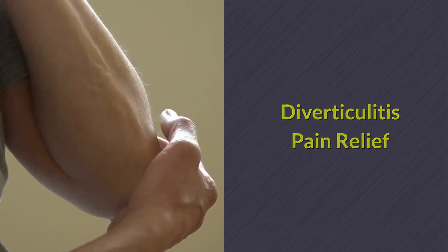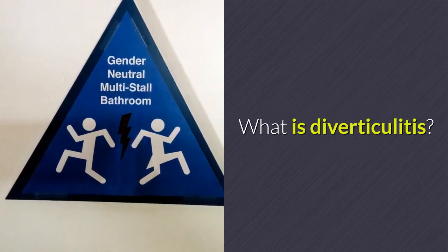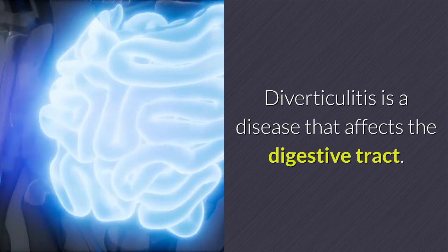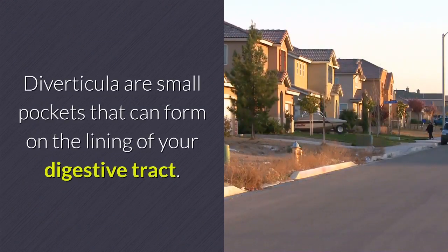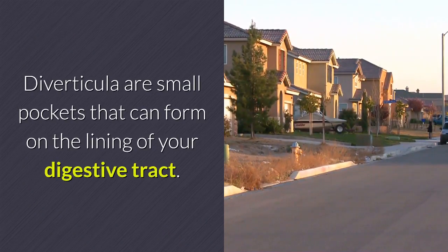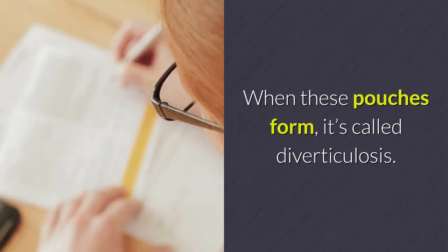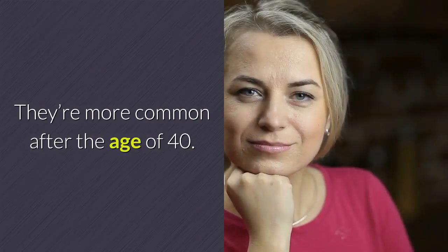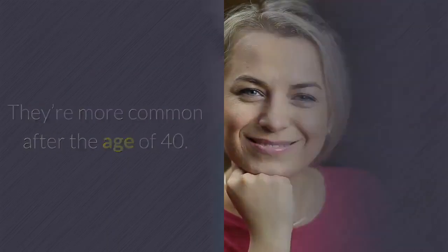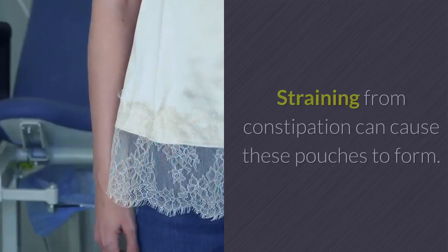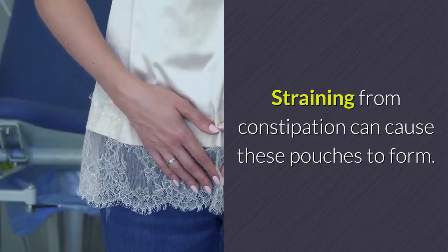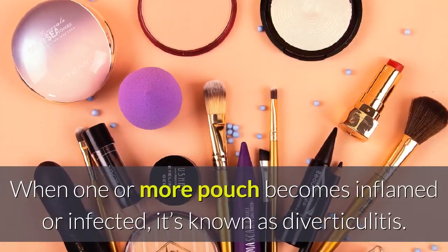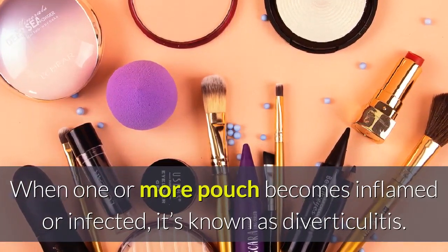Diverticulitis pain relief. What is diverticulitis? Diverticulitis is a disease that affects the digestive tract. Diverticula are small pockets that can form on the lining of your digestive tract. When these pouches form, it's called diverticulosis. They're more common after the age of 40. Most people don't have symptoms. Straining from constipation can cause these pouches to form. When one or more pouch becomes inflamed or infected, it's known as diverticulitis.